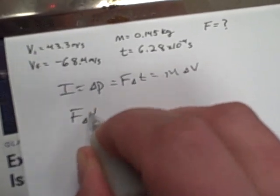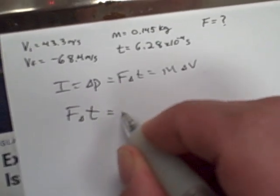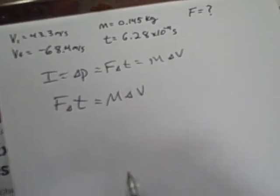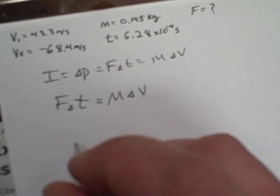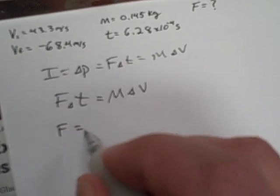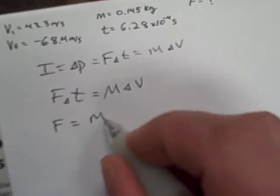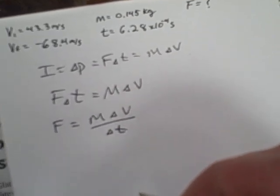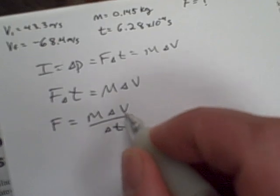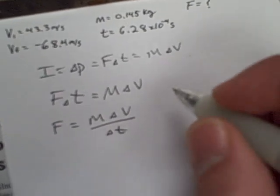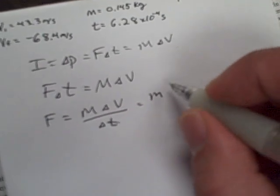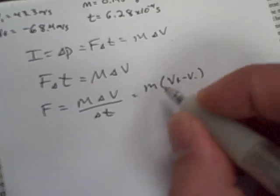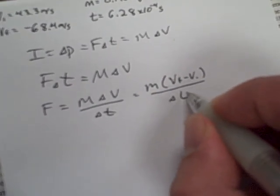We'll say that force times delta T equals mass times delta V, and then we're going to solve for force. So we know that force is going to be equal to mass times delta V over delta T. Additionally, we can expand out the delta V, so we'll have mass times VF minus VI all over the change in time.